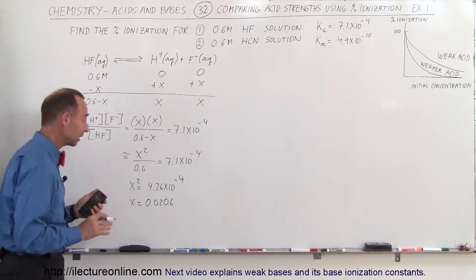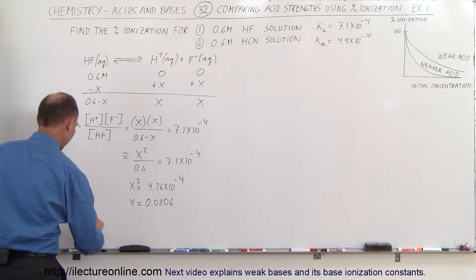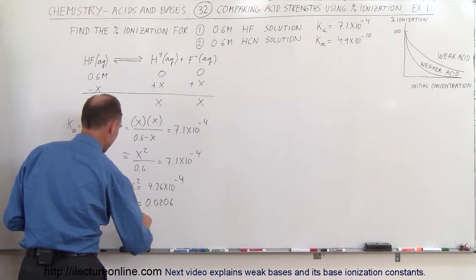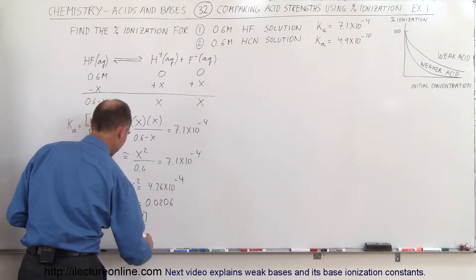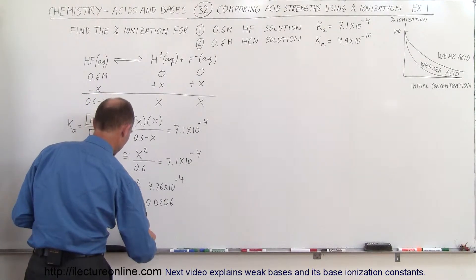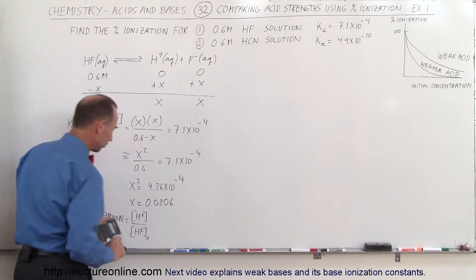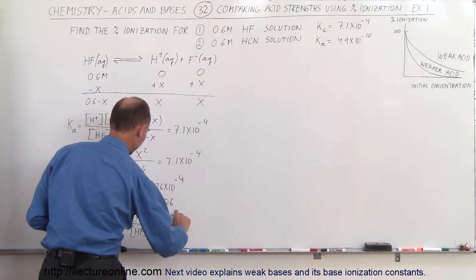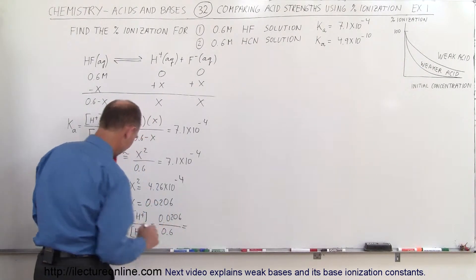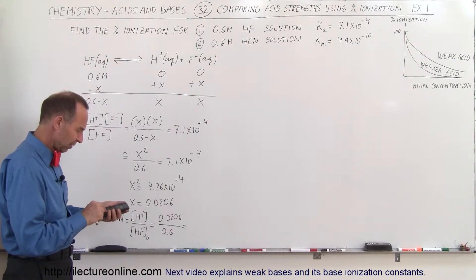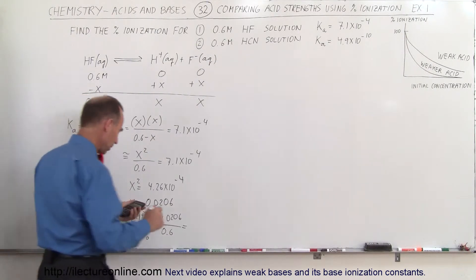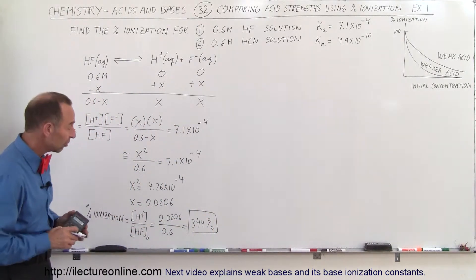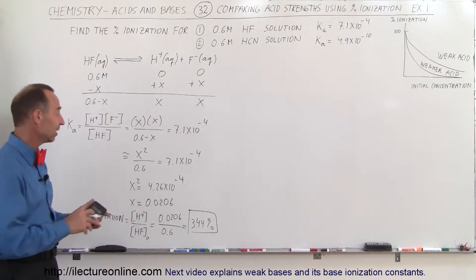From that, we calculate the percent ionization. The percent ionization equals the concentration of the hydrogen ion found in solution divided by the original concentration of the acid, times 100%. This is 0.0206 divided by 0.6, which equals 3.44%. Since that's less than 5%, our approximation is indeed valid.